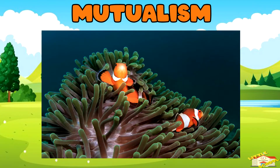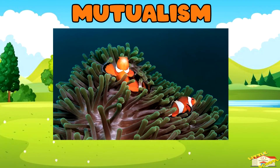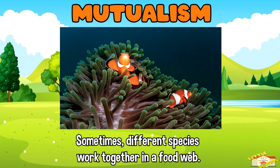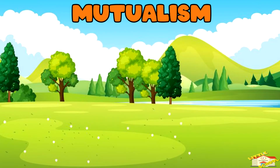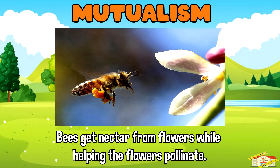Mutualism. Sometimes, different species work together in a food web. For example, bees get nectar from the flowers while helping the flowers pollinate.